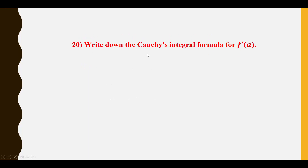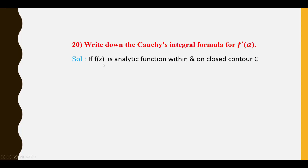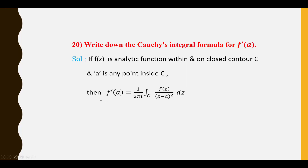Twentieth question: Write down Cauchy's integral formula for F'(a). If F(Z) is analytic within and on closed contour C, and a is any point inside C, then F'(a) = (1/2πi) ∮_C F(Z)/(Z − a)² dZ.